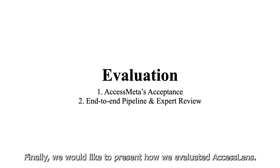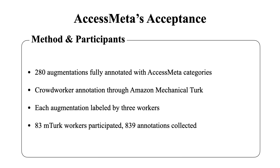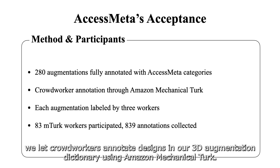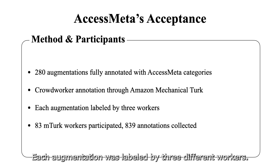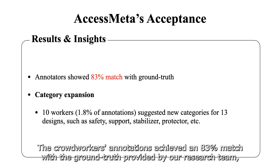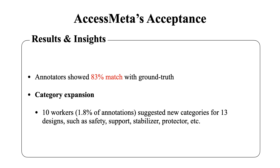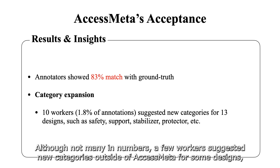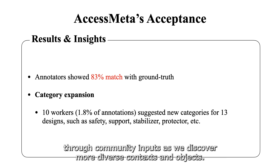Finally, we would like to present how we evaluated AccessLens. To assess how acceptable the XS Meta categories are for a wider population, we let crowd workers annotate designs in our 3D augmentation dictionary using Amazon Mechanical Turk. Each augmentation was labeled by three different workers. The crowd workers' annotations achieved an 83% match with the ground truth provided by our research team, indicating a fairly good acceptance of XS Meta. Although a few workers suggested new categories outside of XS Meta, such as safety, support, stabilizer, and protector, these indicate that XS Meta can be expanded through community inputs as we discover more diverse contexts and objects.